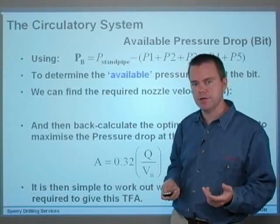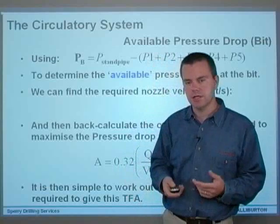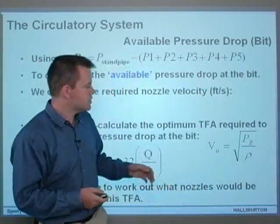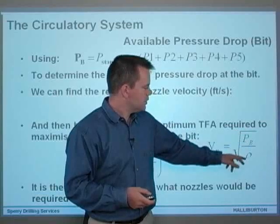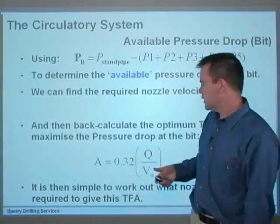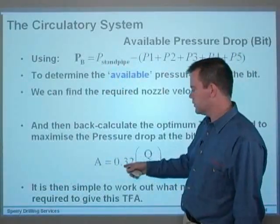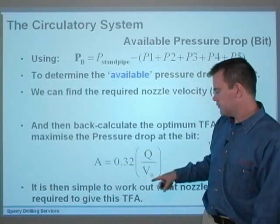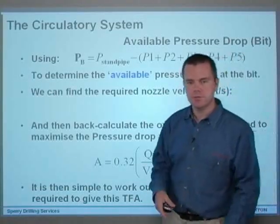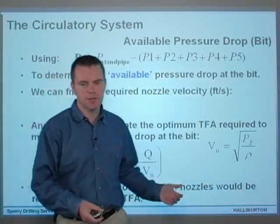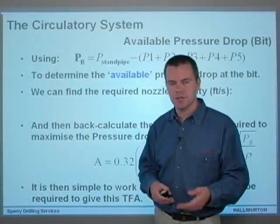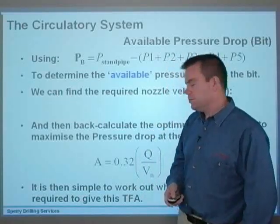You can find the required nozzle velocity in feet per second, then back-calculate the optimum TFA required to maximize the pressure drop at the bit. The nozzle velocity in feet per second is given by the equation: the square root of your available bit pressure drop divided by the density of the mud. The TFA can then be back-calculated as 0.32 times the flow rate over that nozzle velocity. That gives you your TFA, and then you can work out what nozzles are required — three for a rock bit, maybe four with a center jet, or six, seven, eight, depending on bit type.